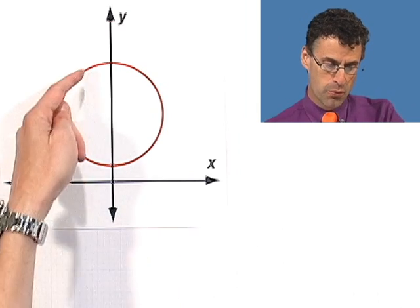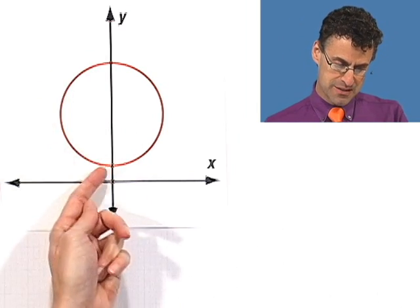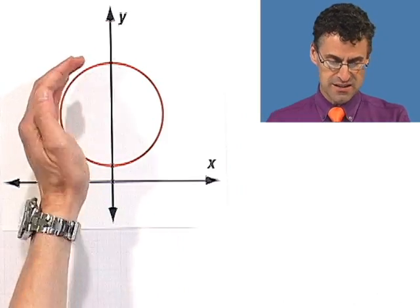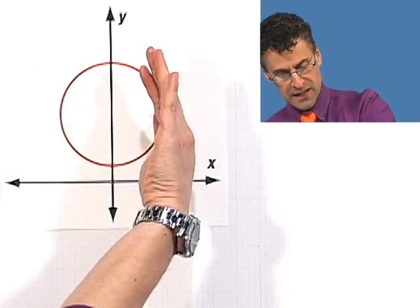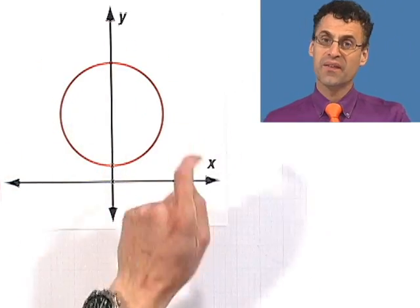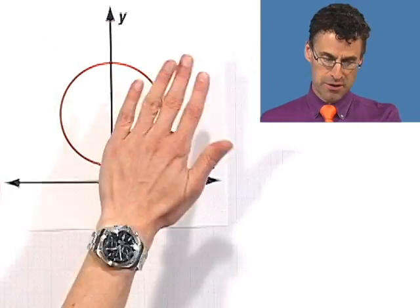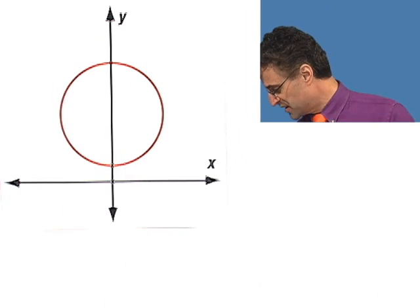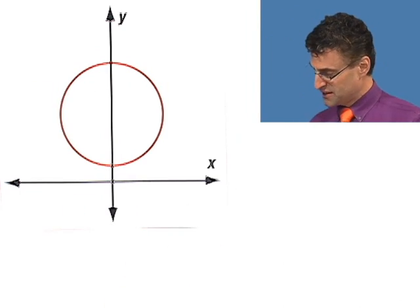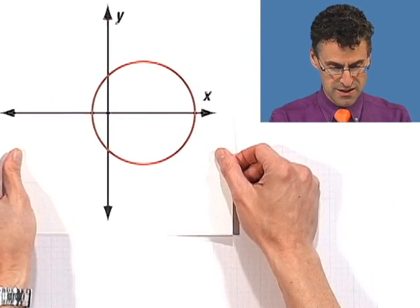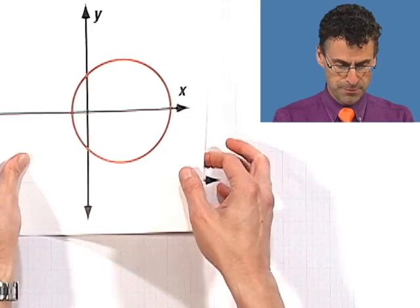Namely, whatever happens on this side has a reflected version on the other side. It's symmetric — a mirror will show it. Here's another example of some kind of symmetry. Let's see if we can figure out what kind of symmetry this is. Here's a different circle.